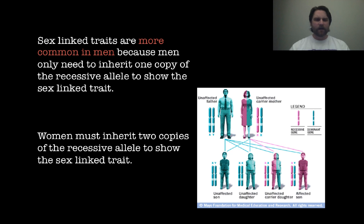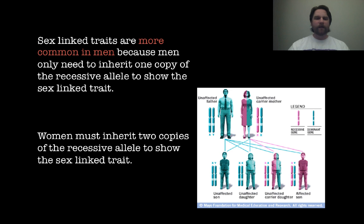To summarize, sex-linked traits are much more common in men because men only inherit one copy of a recessive or dominant allele to show that sex-linked trait. Not all sex-linked disorders follow a recessive pattern — some follow a dominant pattern, just like the autosomes, the non-sex chromosomes. Women would have to inherit two copies of a recessive allele to show a trait, or one dominant and one recessive. But most of these X-linked traits that we look at are recessive, which is why they are much more prevalent in men than in women.